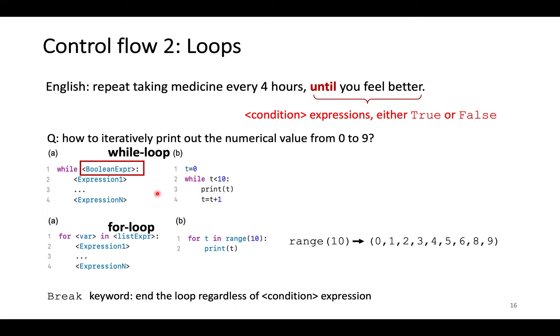Loop is an iteration control flow. For instance, repeat taking medicine every four hours until you feel better. Here, the condition expression is feel better. Loop is to repeat the action until the condition expression reaches true. There are two ways to realize a loop control flow.